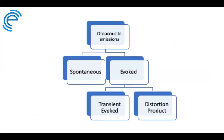Otoacoustic emissions are low-level sounds generated by the ear as a natural byproduct of the hearing process. Spontaneous OAEs occur naturally without external stimulation — in a healthy ear they can be generated in response to sounds the patient hears, but this isn't clinically useful. The notably useful ones are evoked OAEs, specifically transient evoked (TEOAEs) and distortion product OAEs (DPOAEs), which enable us to systematically measure outer hair cell function in the cochlea.